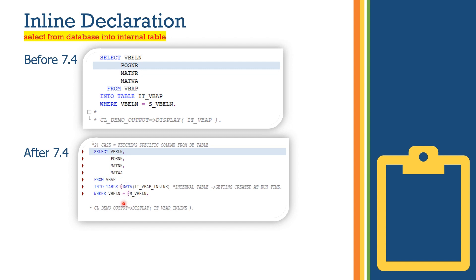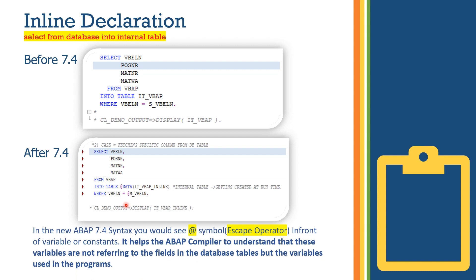You will also notice that there is an at-sign symbol that we are using — this is basically an escape operator. It helps the ABAP compiler understand that these variables are not referencing fields in the database tables. Otherwise, if you don't specify the at-sign, it would give you an error, because the ABAP compiler will think that S_VBLN or IT_VBAP_inline are fields of the VBAP database table only. The escape operator makes these variables reference program variables, not database table fields.